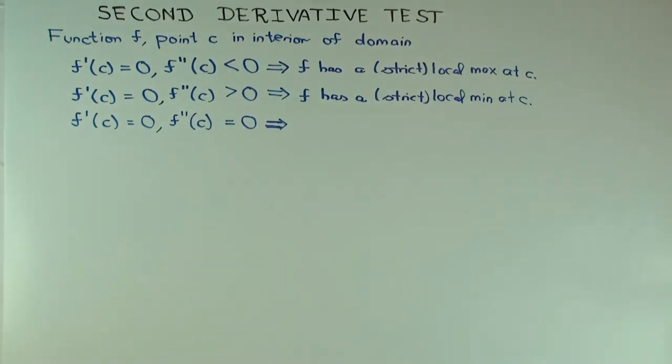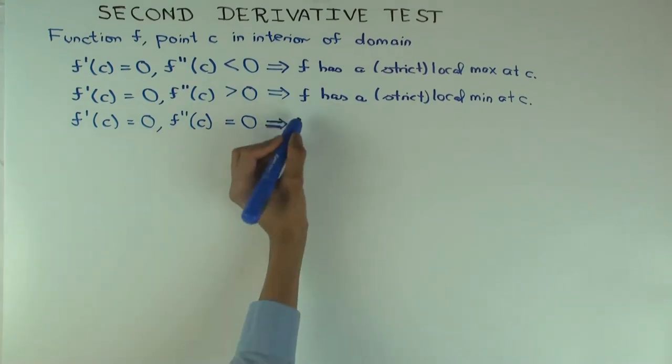What about the third case? Inconclusive. So, you cannot say whether it's a max or min or neither. It could be anything.